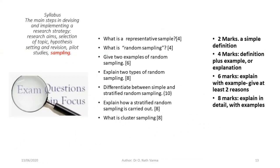Let us now look at some of the questions you might get on this topic. What is a representative sample? (4 marks) What is random sampling? (4 marks) Give two examples of random sampling. (6 marks) Explain two types of random sampling. (8 marks) Differentiate between simple and stratified random sampling. (10 marks) Explain how a stratified random sampling is carried out. (8 marks) What is cluster sampling? (8 marks)